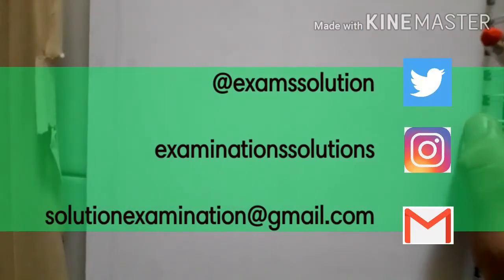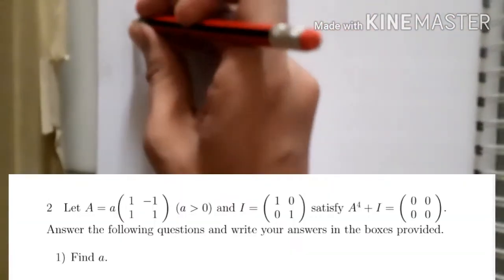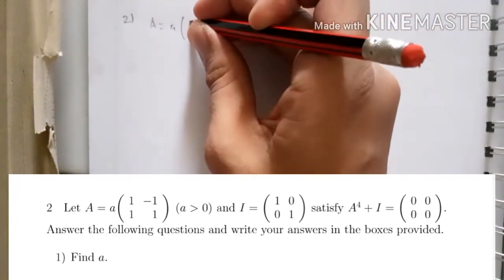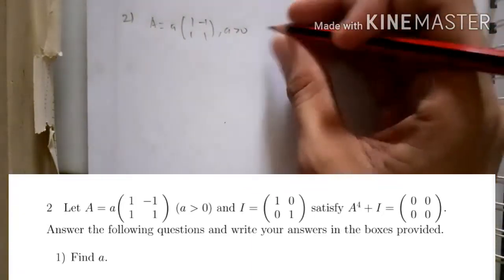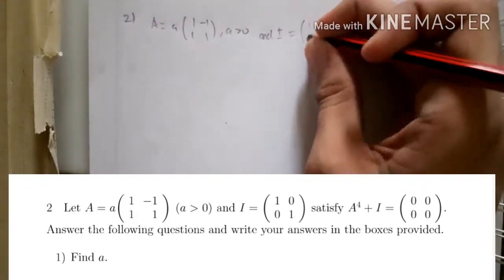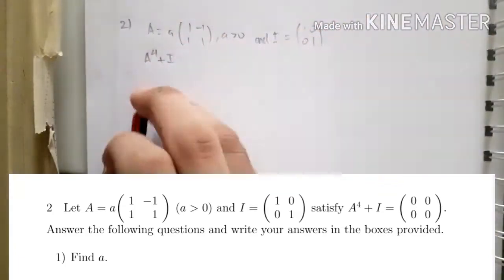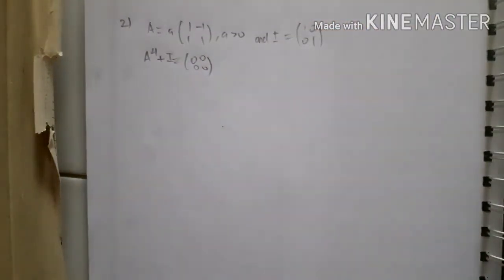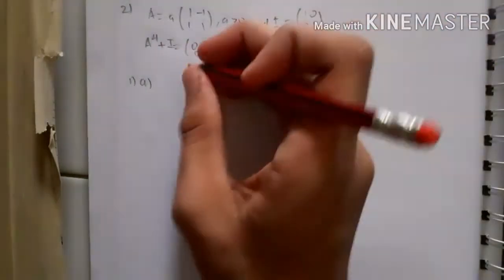Hello everyone, welcome to this Concise Mathematics 2016 Part 2. We have integration and matrix equation problems. For number two, let A be a matrix a*[[1,-1],[1,1]] with a greater than zero, I the identity matrix [[1,0],[0,1]], satisfying A to the power of 4 plus I equals the zero matrix. We have to find a, so we need to calculate A to the power of 4 first.